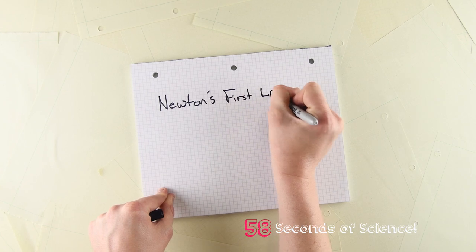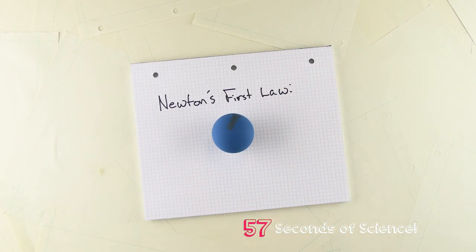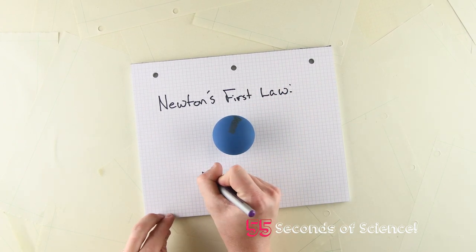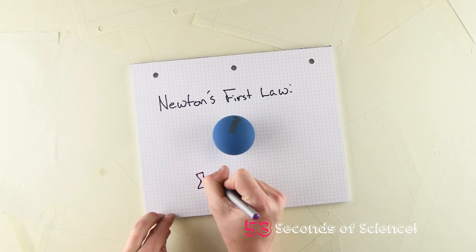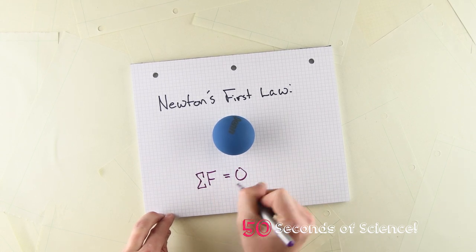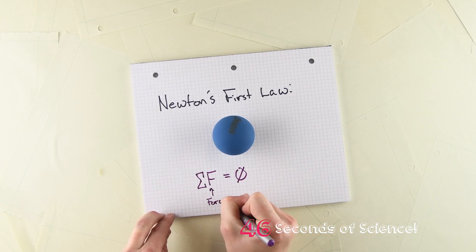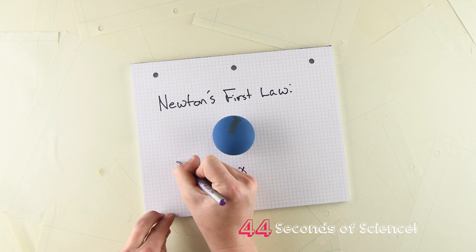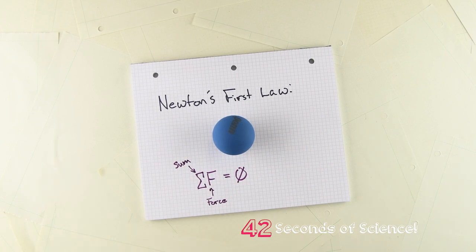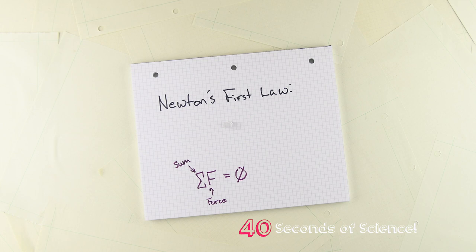Newton's First Law states that an object will remain at rest unless acted upon by an outside force. Mathematically, Newton's First Law says that the sum of the forces acting on an object at rest will always sum to zero. In other words, all the forces acting on an object must balance, and the object will be at rest and won't move unless another outside force acts on it.